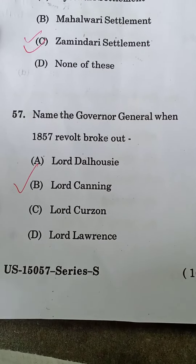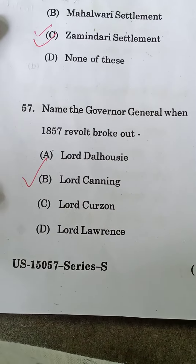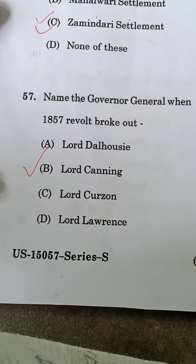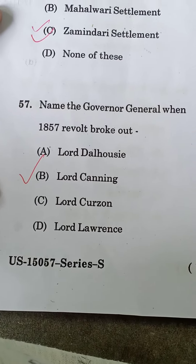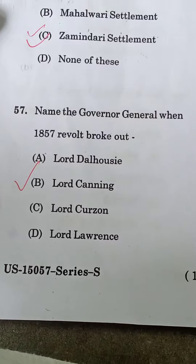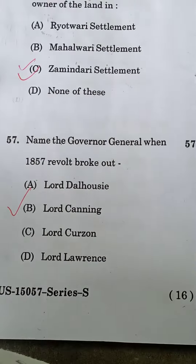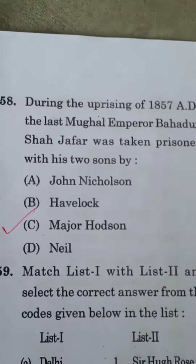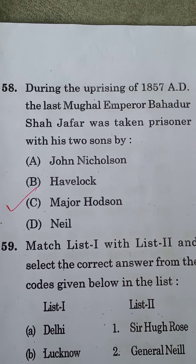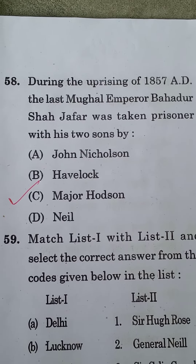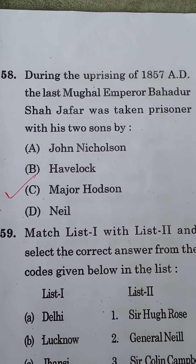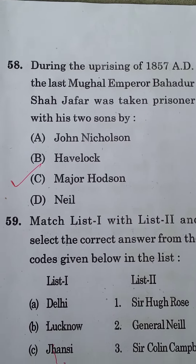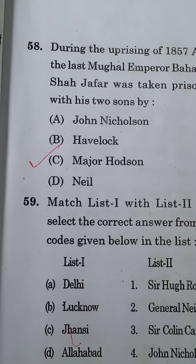Name the Governor General when the 1857 revolt broke out. Lord Canning was the Governor General at the time when the 1857 revolt broke out. During the uprising of 1857 AD, the last Mughal Emperor Bahadur Shah Zafar was taken prisoner along with his two sons by Major Hudson.